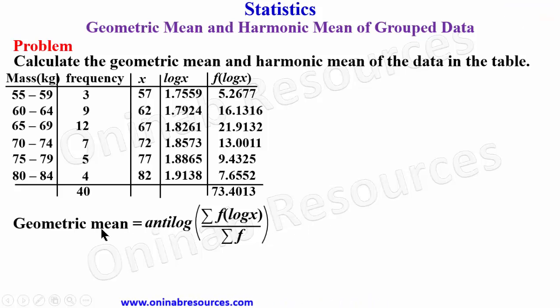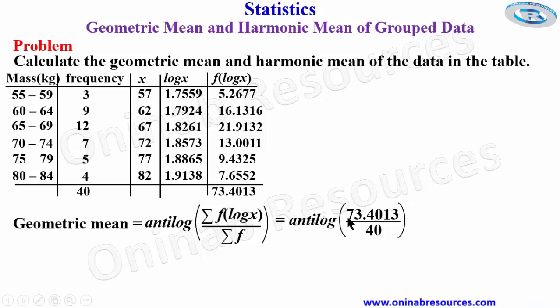We then substitute into the formula for geometric mean. This is going to give us the antilog of 73.4013 over 40. So simplify what we have inside this bracket - 73.4013 divided by 40 gives antilog of 1.8350. Finding the antilog of 1.8350 we have 68.39. So from here we are done calculating the geometric mean.